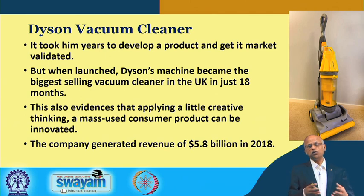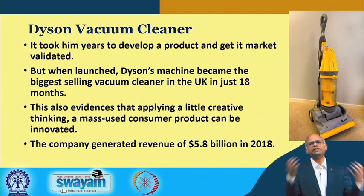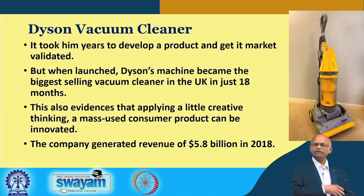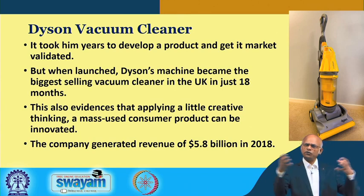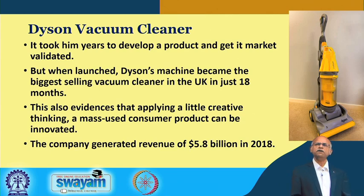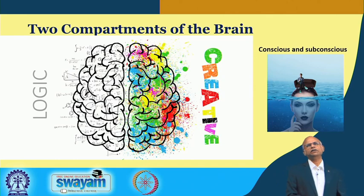This shows how invention and innovation can be done. The whole process is: identify the problem, define the problem, find a solution, put everything together, prototype, validate, and go to market — this is how to innovate.